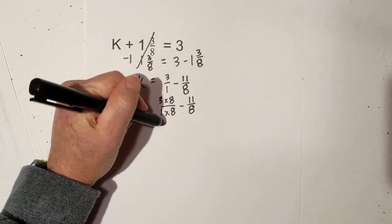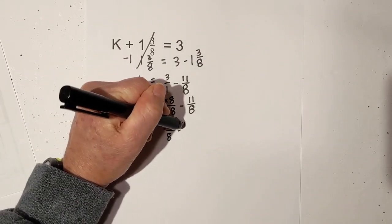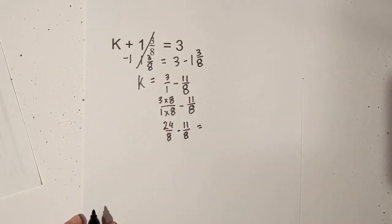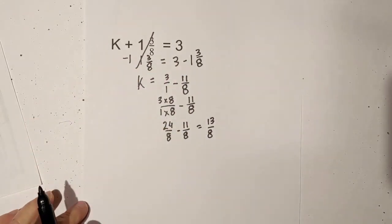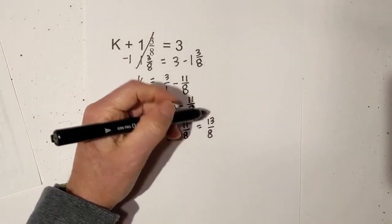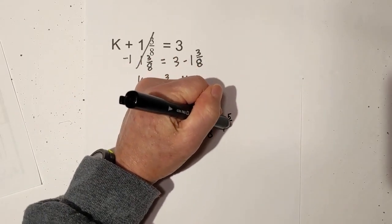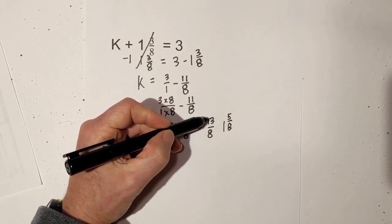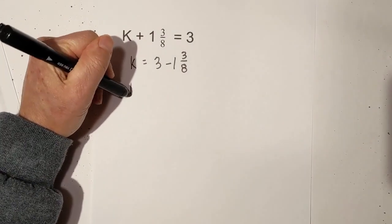That gives me 24 eighths minus 11 eighths, which equals 13 eighths. If you'd like, you can convert this. 8 goes into 13 one time with 5 left over, so 13 minus 8 is 5. Here's another technique you can use.